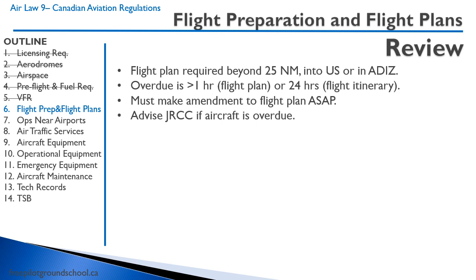A flight plan is required when flying beyond 25 nautical miles, if flying into the United States, or in the air defense identification zone. You are considered overdue if you are one hour past your ETA on a flight plan, or more than 24 hours past your ETA on a flight itinerary. A flight itinerary can be filed with any responsible person. You must make amendments to your flight plans as soon as possible and advise ATC or the Joint Rescue Coordination Center if an aircraft is overdue.